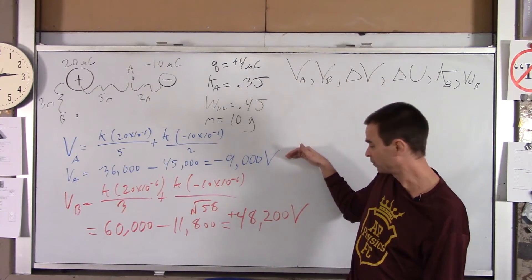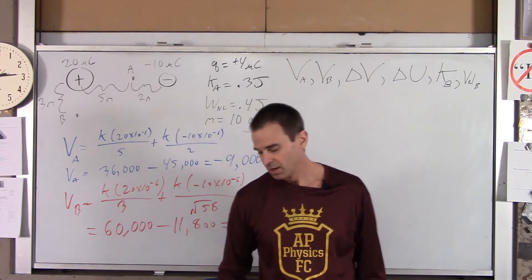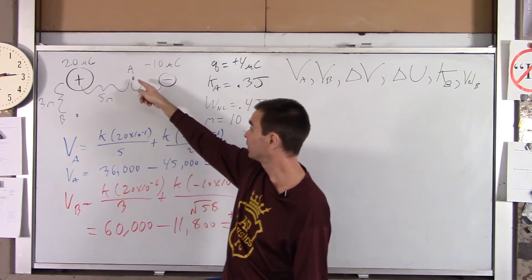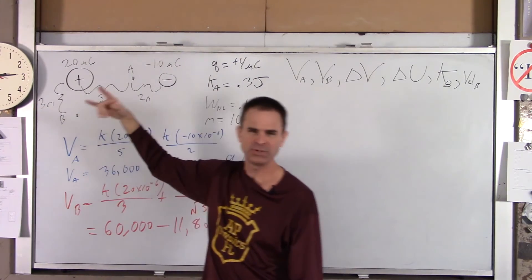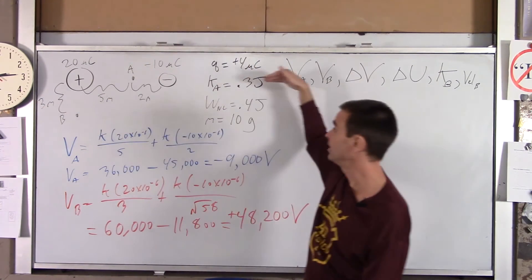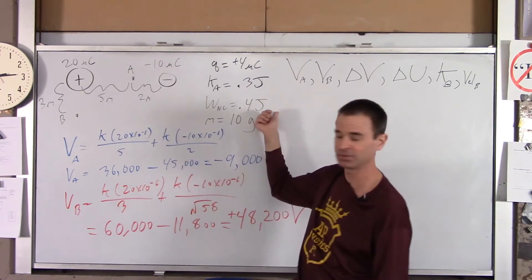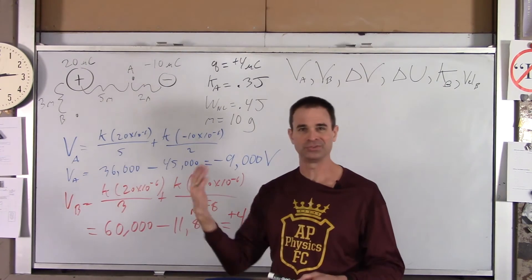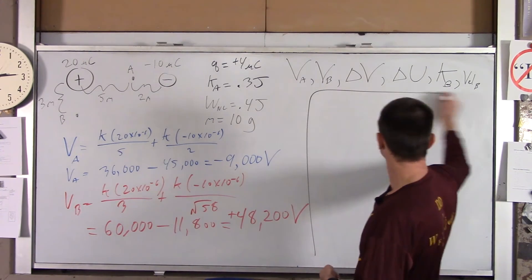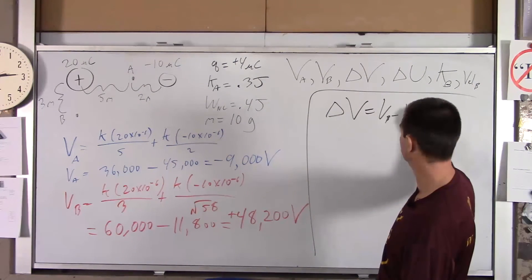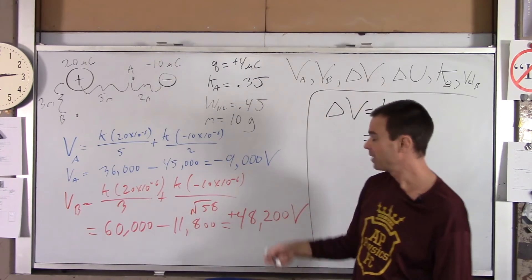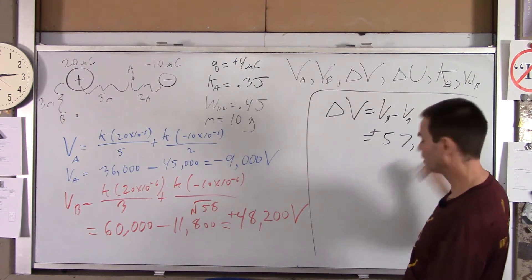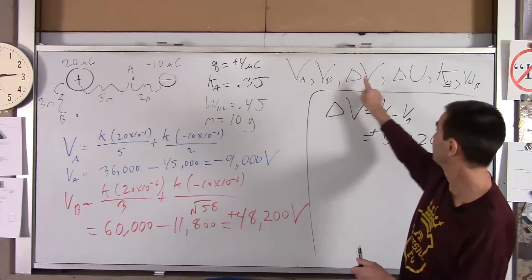So the voltage went from negative 9,000 to 48,200 volts. The positive charge doesn't want to go to B on its own — it wants to stay closer to the negative charge — so we had to shove it toward B by throwing it and giving it a push along the way. The change in voltage is simply VB minus VA, which is 48,200 minus negative 9,000, giving 57,200 volts.